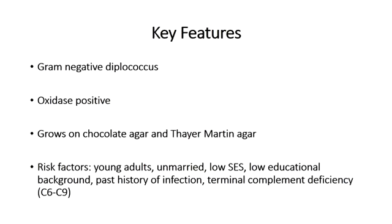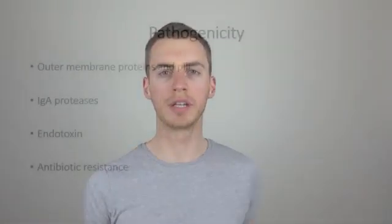In terms of the risk factors for a Neisseria gonorrhea infection, there are a number you may need to look for in the vignette. It typically occurs in young adults who are unmarried, of low socioeconomic status, and of low educational background. They may have a history of a previous Neisseria gonorrhea infection, and it occurs in population groups in which the infection rate is high.